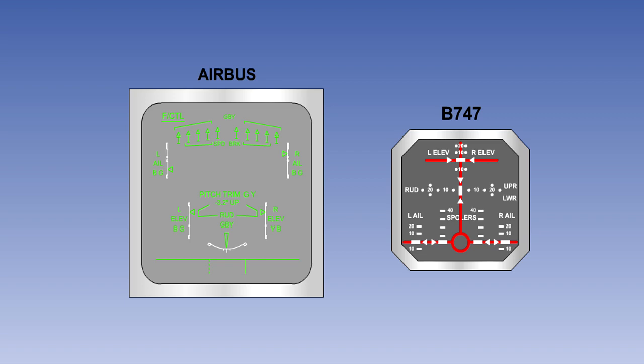You now know how the aircraft is controlled about its three axes. To keep the pilots informed of what the primary flight controls are doing, their positions are displayed on an indicator on the flight deck. There are a number of different systems used for this.